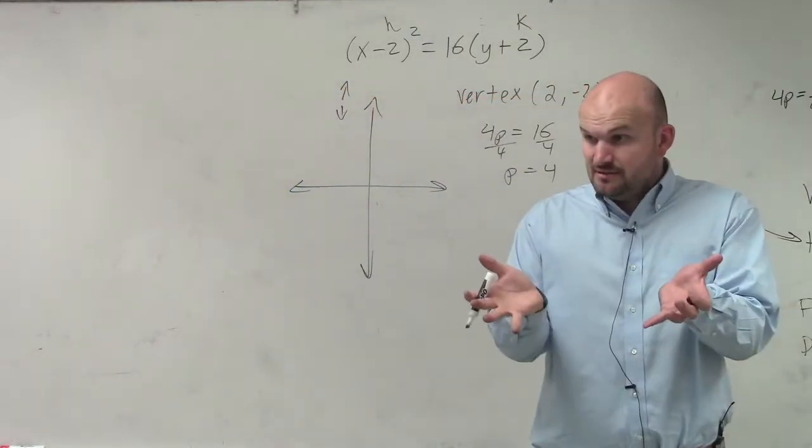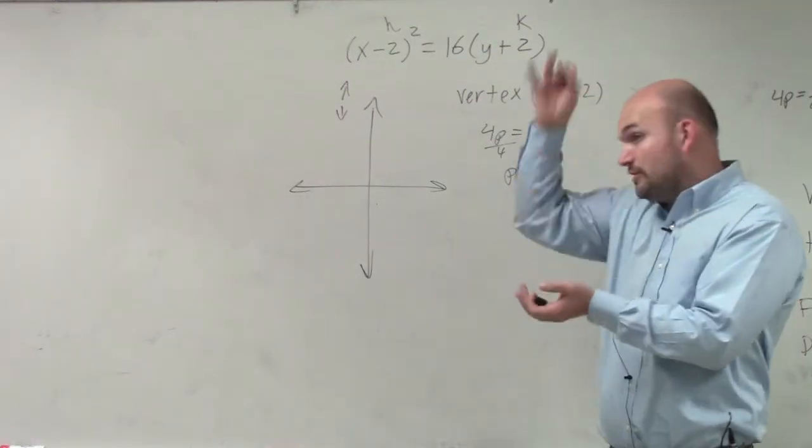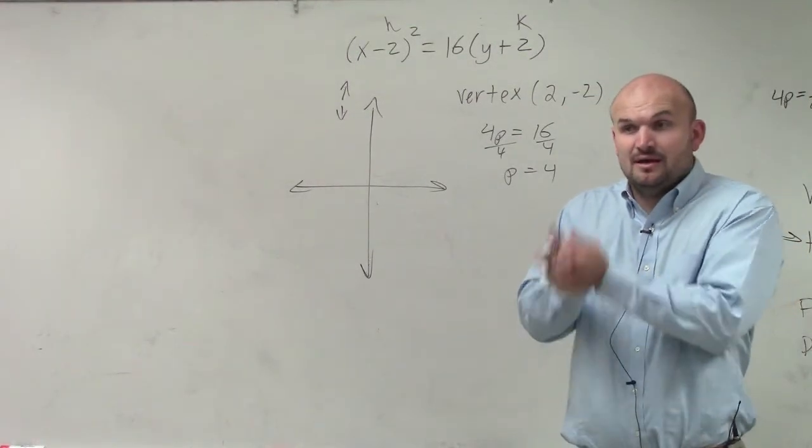So p is positive though, right? So if I know my graph is either going up or down, and if p is positive, that means I have to be going up.